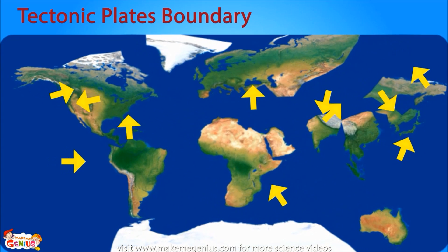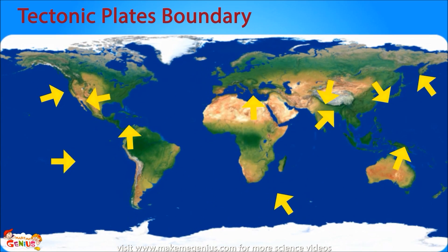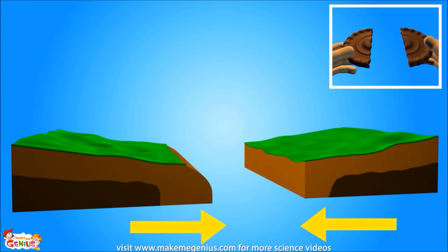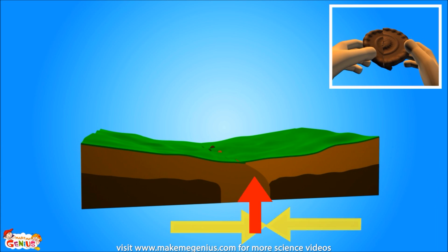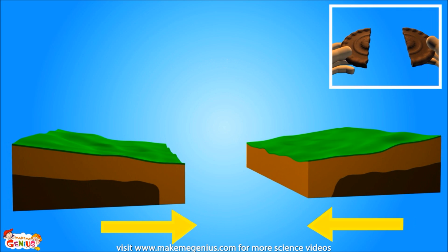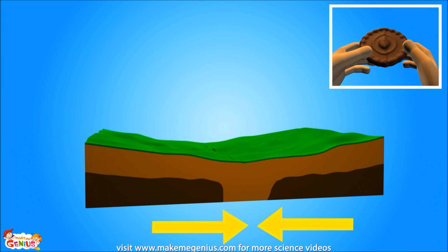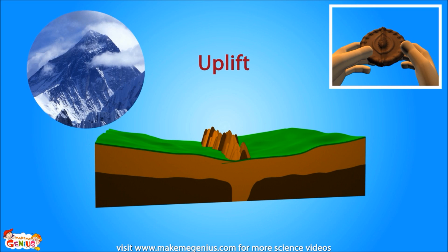As the tectonic plates move, they collide with each other. The plates can collide in many ways. Sometimes, when two tectonic plates move towards each other, one of them is forced downwards. This is called subduction. Yet sometimes, when they push against each other, they are both crumpled. This is called uplift. You'll be surprised to learn that this is how the Himalayas were formed.